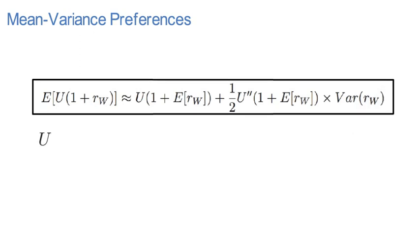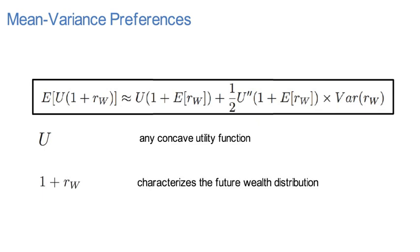Here U can be any concave utility function. 1 plus Rw characterizes the future wealth distribution with Rw being the return on wealth. Notice, as the utility function is concave, U'' is negative.